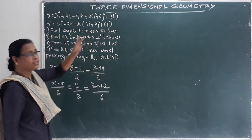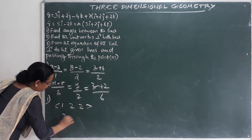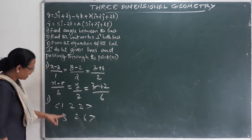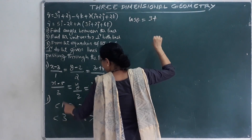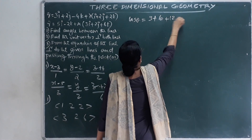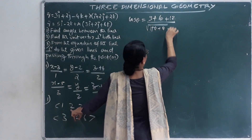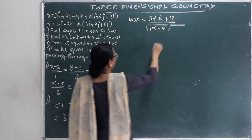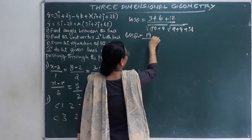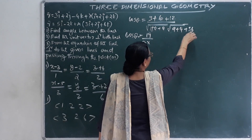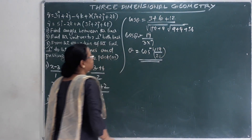Next, find the angle between the lines. The direction ratios of the first line are 1, 2, 2 and of the second line are 3, 2, 6. Using cos θ = (b1·b2)/(|b1||b2|): the dot product is 3 + 4 + 12 = 19, divided by root(1+4+4) × root(9+4+36) = root 9 × root 49 = 3 × 7 = 21. So θ = cos⁻¹(19/21).